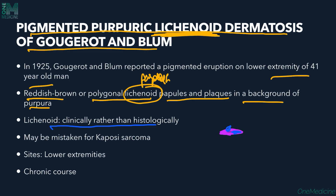Gougerot-Blum type can sometimes be mistaken for Kaposi's sarcoma, which also presents with purplish or brownish-red papules and nodules on the extremities and oral mucosa. However, Kaposi's sarcoma is most commonly associated with HIV, which helps in differentiation. The site is the lower extremities and it has a chronic course.